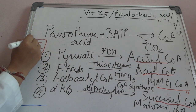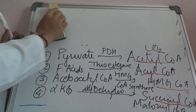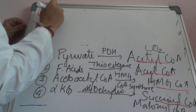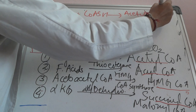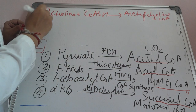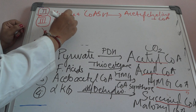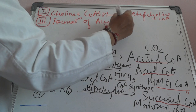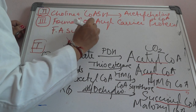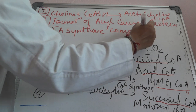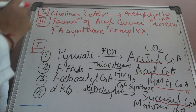The first important biochemical function of coenzyme A is the formation of various CoA molecules: acetyl-CoA, acyl-CoA, HMG-CoA, succinyl-CoA, and malonyl-CoA. The second important function is the formation of acetylcholine: choline plus CoA-SH forms acetylcholine with the removal of CoA. The third important function is the formation of acyl carrier protein, which is also part of the fatty acid synthase complex that helps in the synthesis of fatty acids.